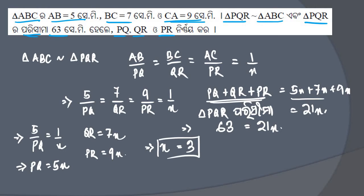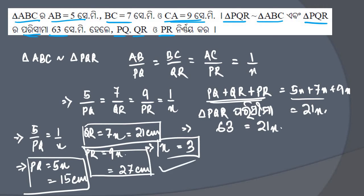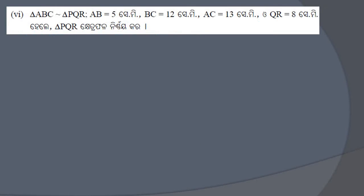The perimeter of triangle PQR is given as 63cm, so 63 equals 21x, meaning x equals 3. Therefore PQ equals 5 times 3 equals 15cm, QR equals 7 times 3 equals 21cm, and PR equals 9 times 3 equals 27cm.